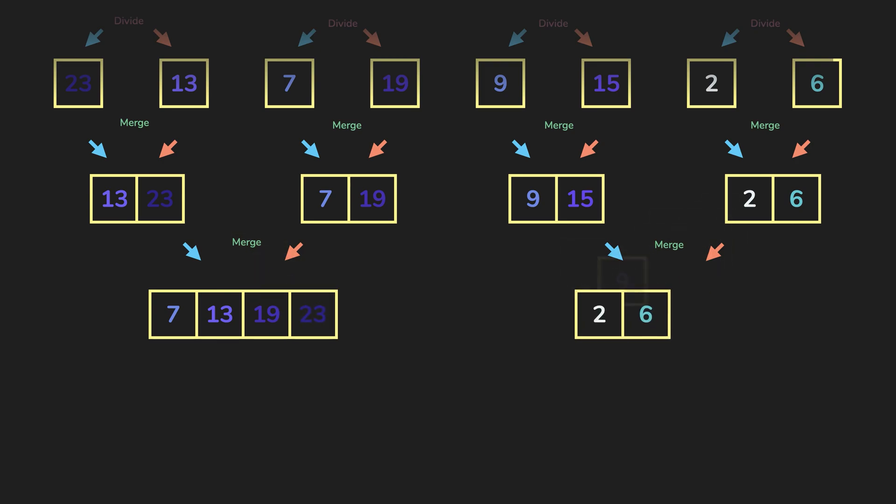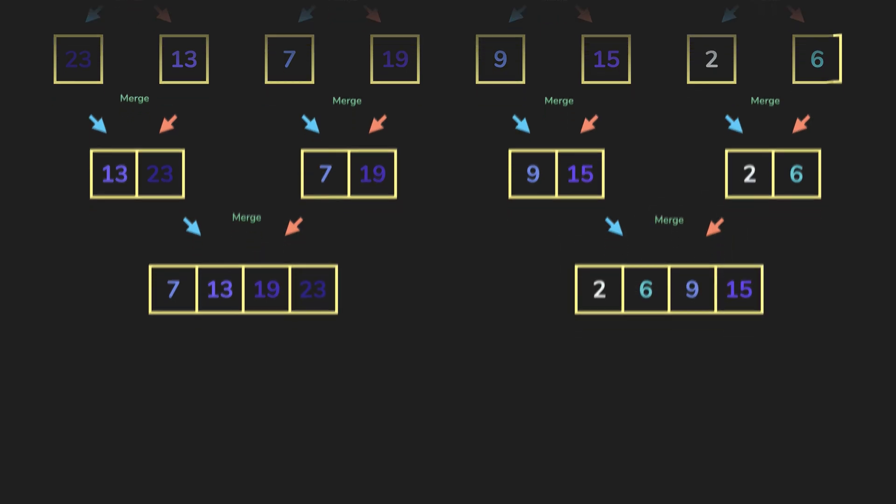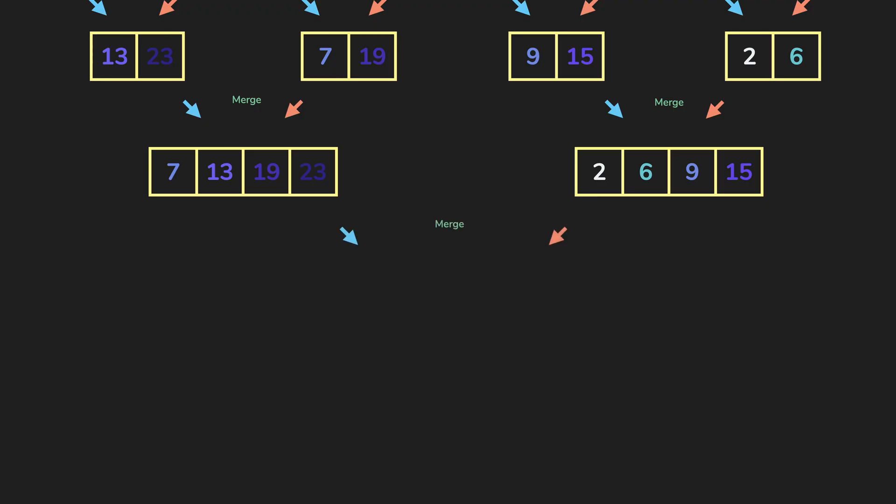And then the parents of them will do the same all the way to the end until our final merge, which we merge two sorted arrays of length four. And finally we get our sorted array.